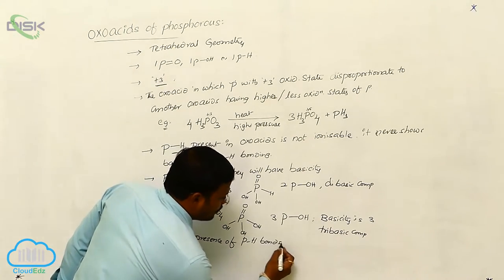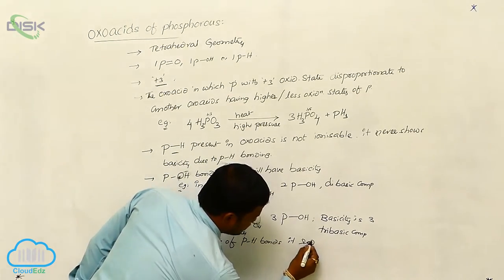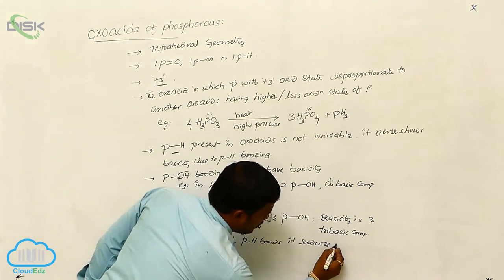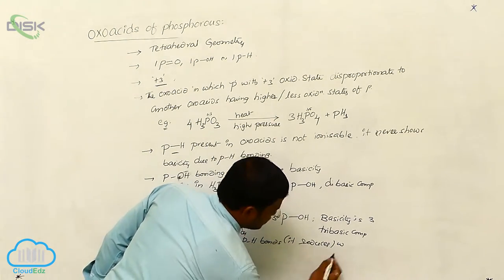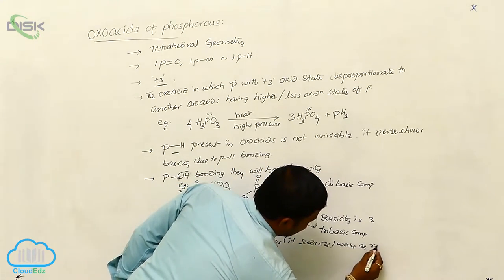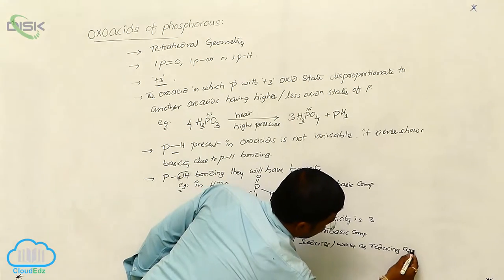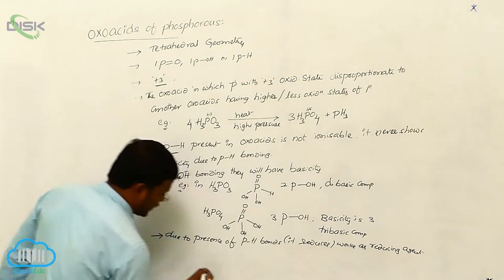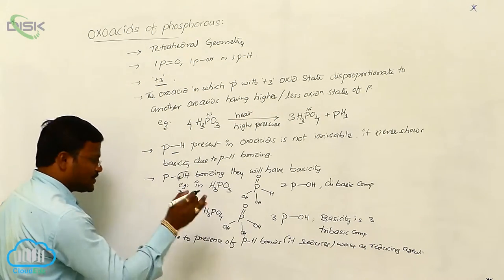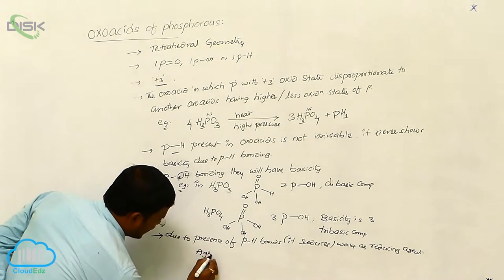Due to the presence of P-H bonds, it works as a reducing agent. Due to its reducing character, it reacts with silver nitrate.